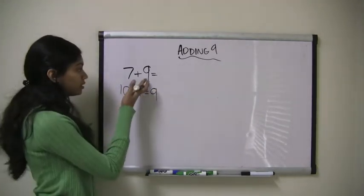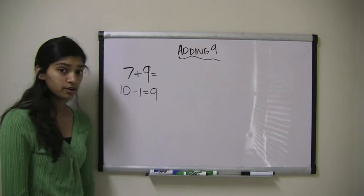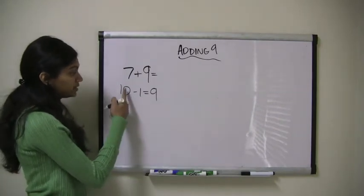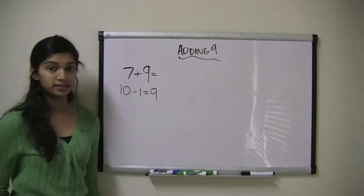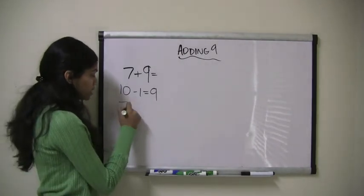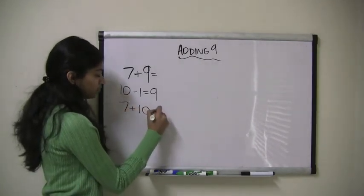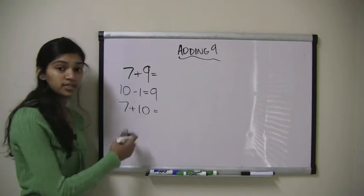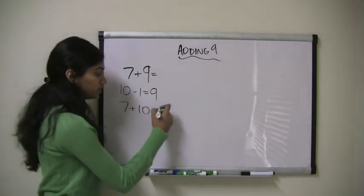Now instead of adding 9 and 7 together, we are going to first add 10 and then subtract 1 to get the same answer. So I would do 7 plus 10 first. And what does 7 plus 10 equal? 7 plus 10 equals 17.